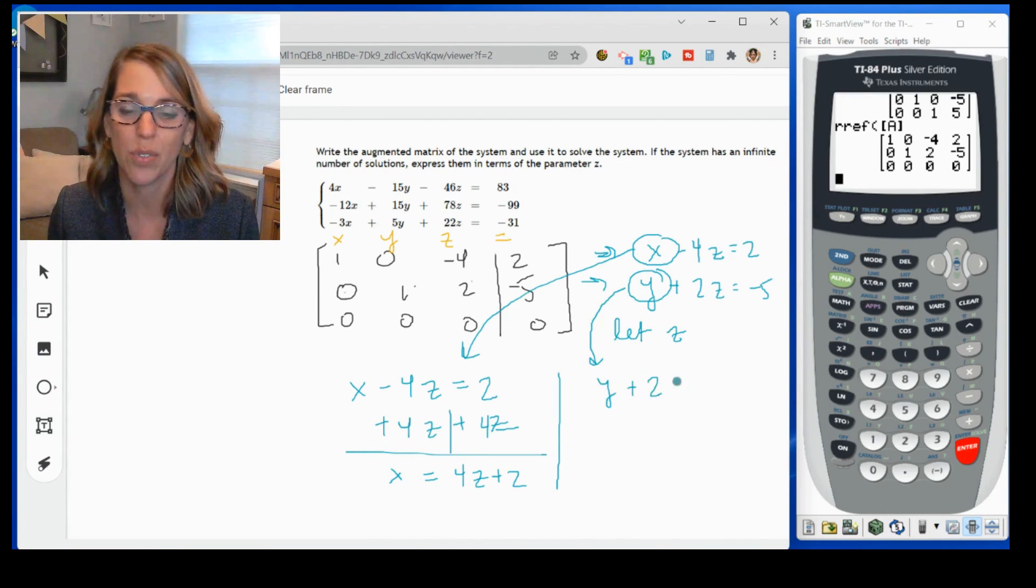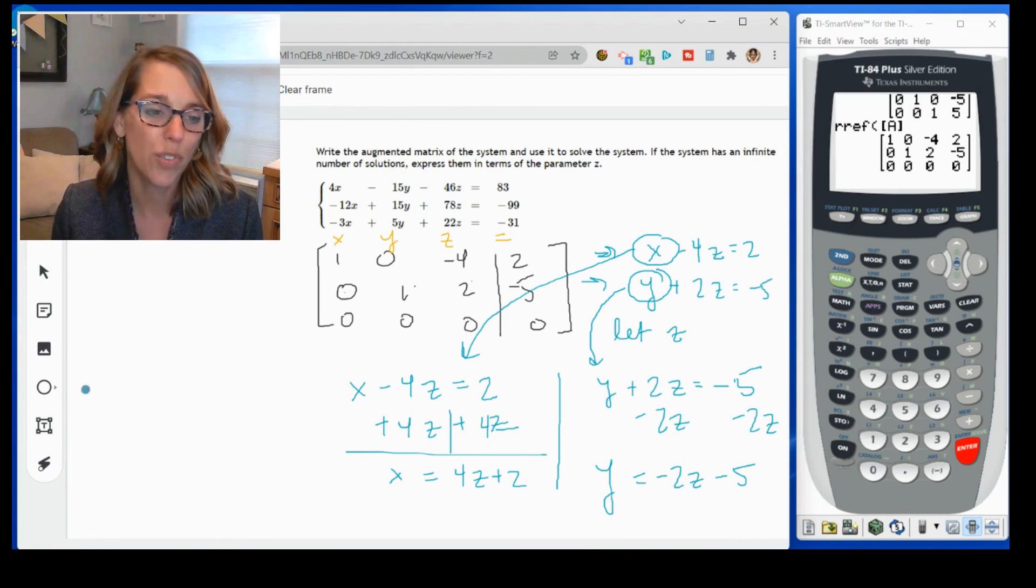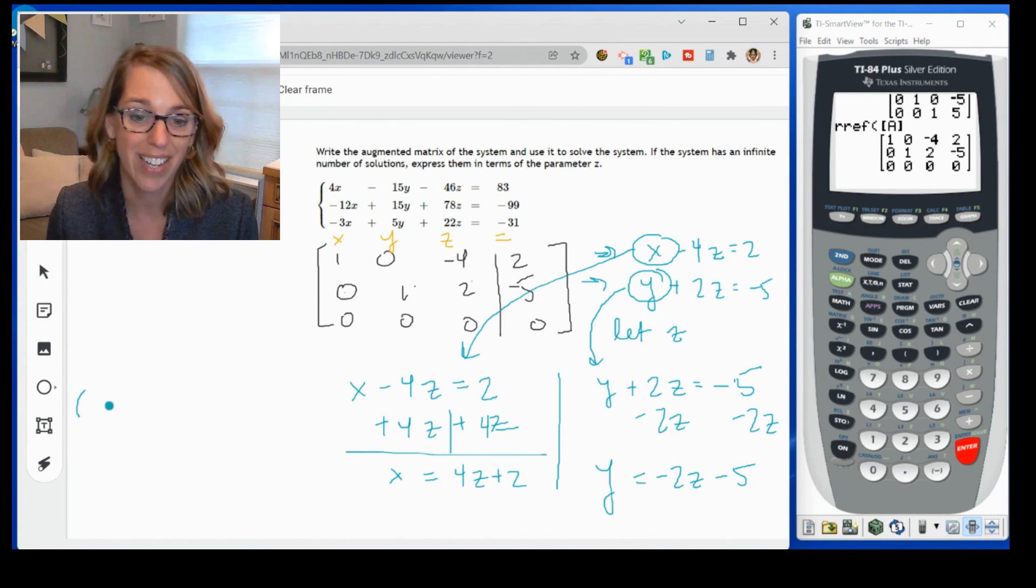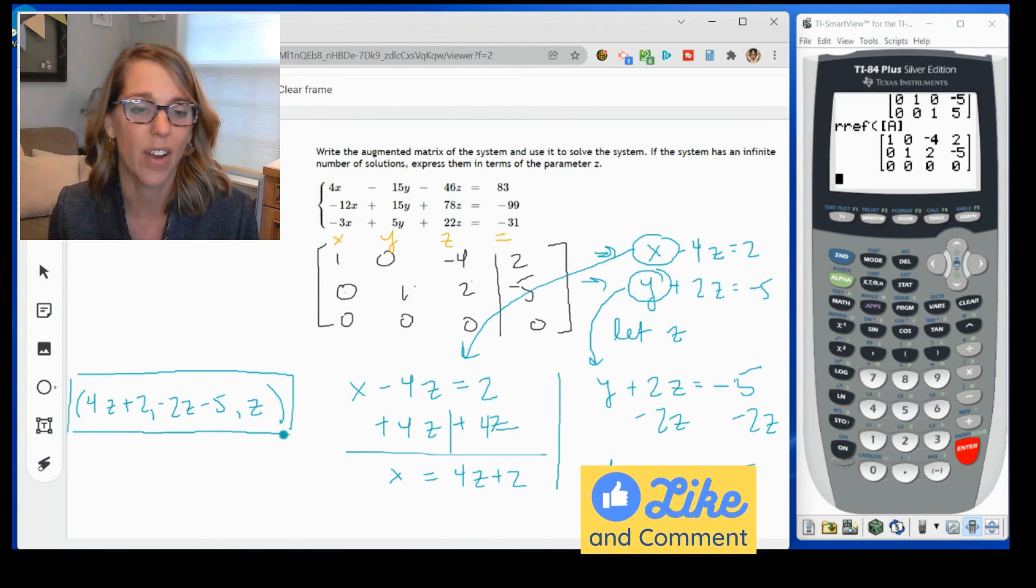And I'll do the same thing here. Y plus two Z equals negative five. This time I'm going to subtract that two Z from both sides. And I get Y is equal to negative two Z minus five. The ordered triple this time has the variable Z in it. So I can write X as four Z plus two, Y as negative two Z minus five. And then Z is any value Z and it determines the values of our X and our Y.